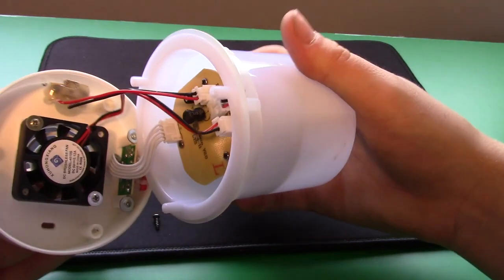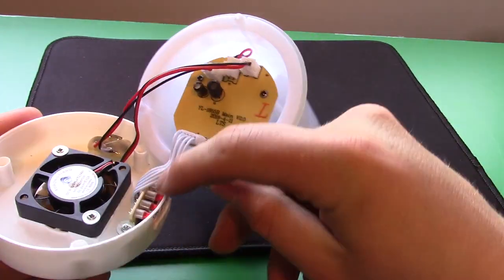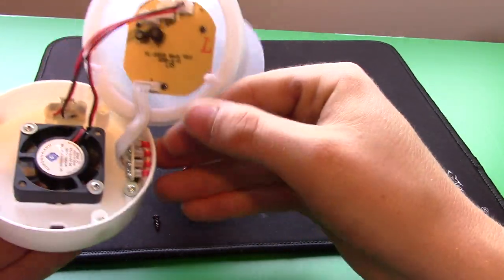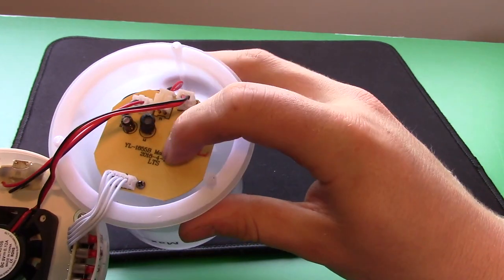When we open it up, you can see the fan here. This is the hour indicator with the button. Here's the power input jack and here's the main circuit board.